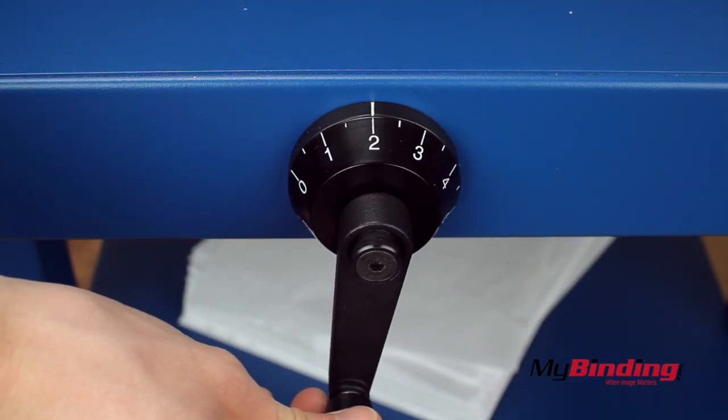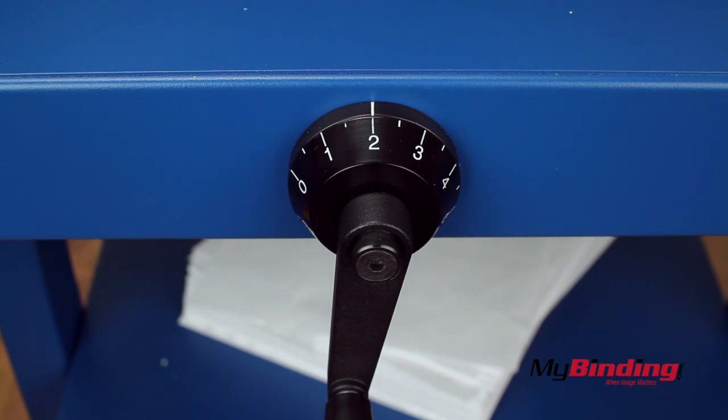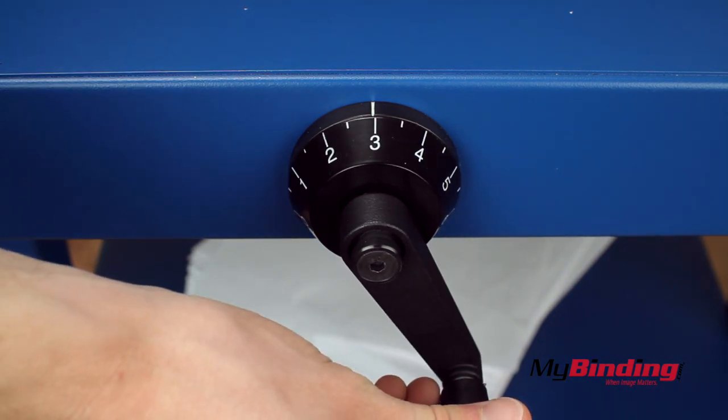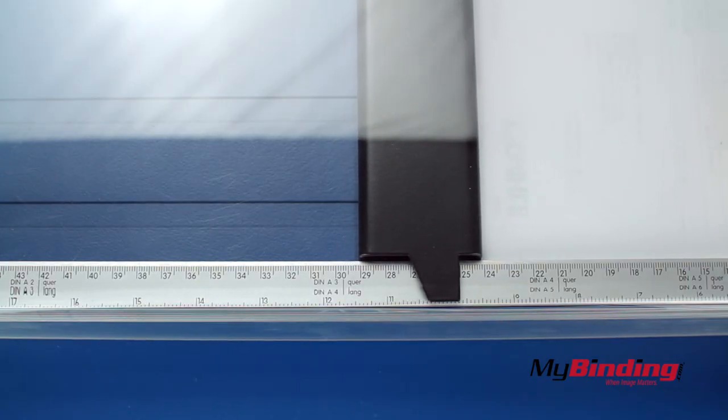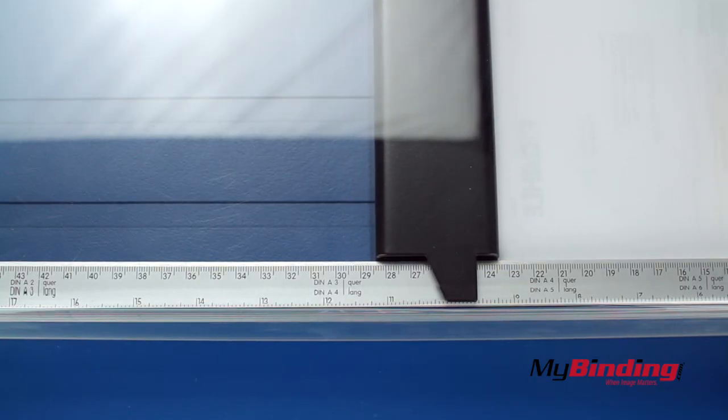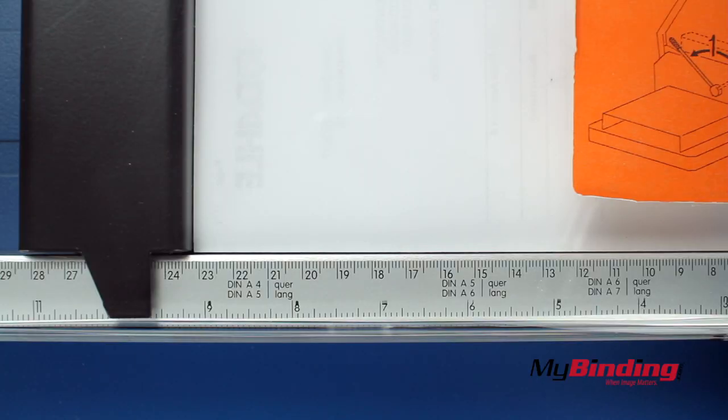Use the lever in the front to make your measurement adjustments. Each number moves a millimeter, and a full revolution is a centimeter. We can see here how it moves in the back. Of course, it has both inch and centimeter measurements and guides to common paper lengths.